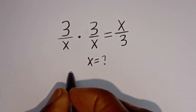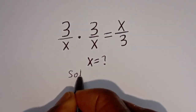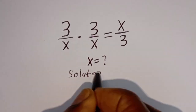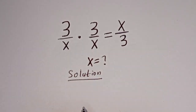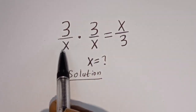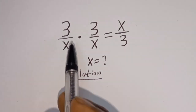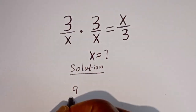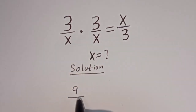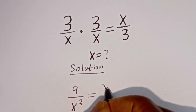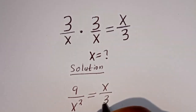Solution. Here we have 3 divided by s multiplied by 3 divided by s. 3 times 3 is 9, divided by s times s, which is s squared, is equal to s divided by 3.